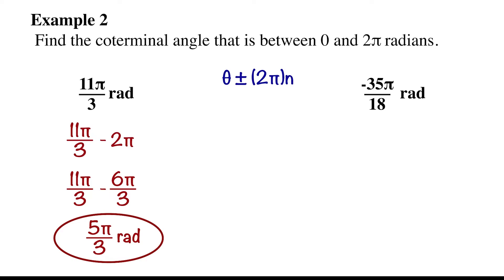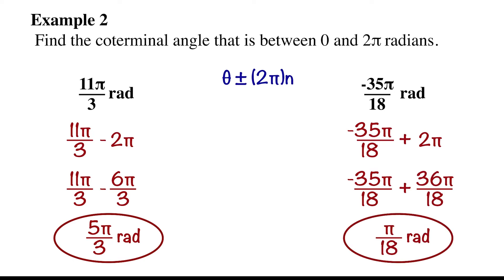With negative angles, again, we add 2 pi. First, we find the common denominator, then add the fractions. We get 1 pi over 18 radians, but we usually don't write the 1, so we just say pi over 18 radians.